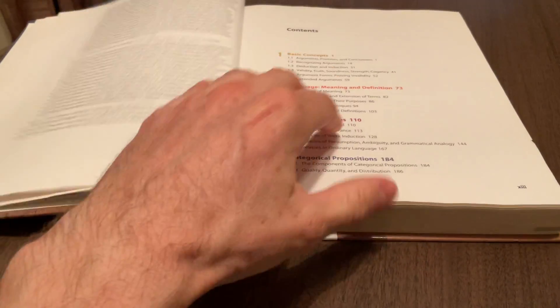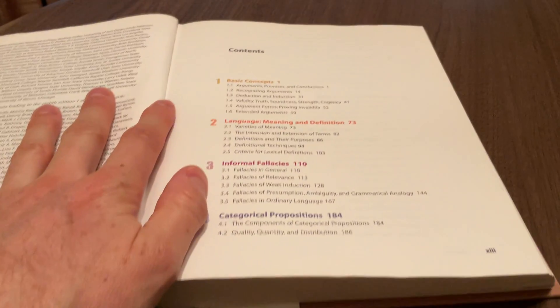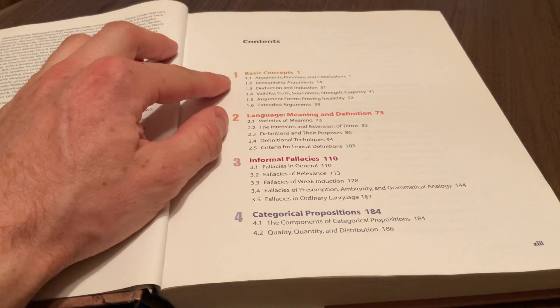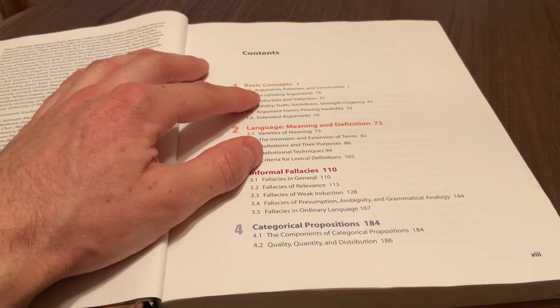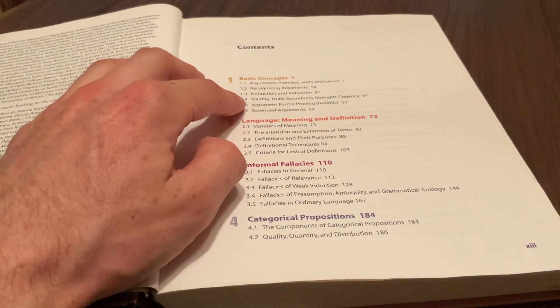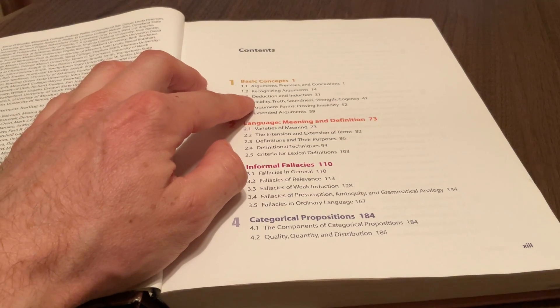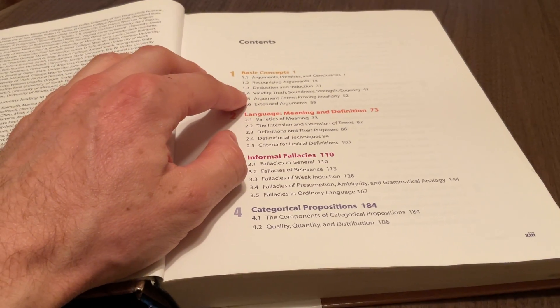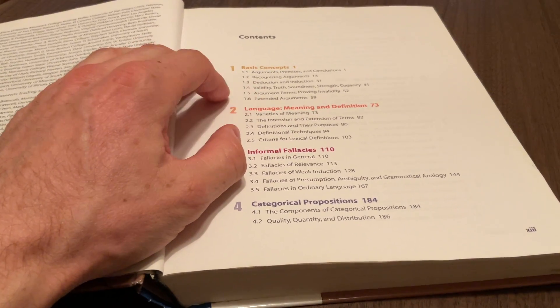Let's look at the table of contents. Chapter one is on basic concepts: what are arguments? When thinking about an argument, there are premises, there's a conclusion. It's thinking about the difference between deduction and induction, the difference between validity and soundness.